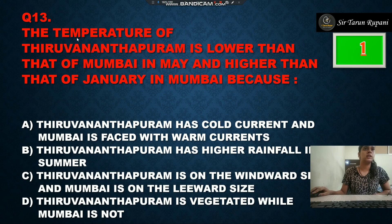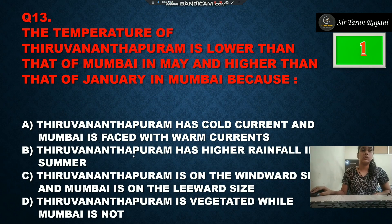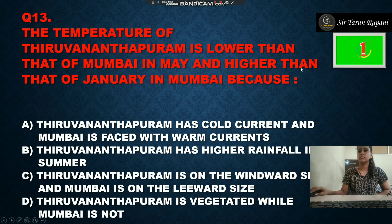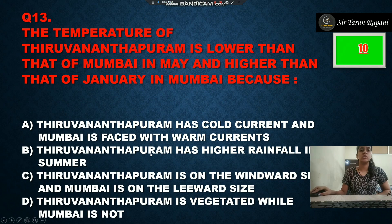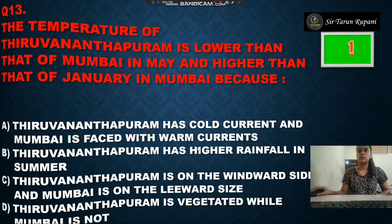Our next question: the temperature of Thiruvananthapuram is lower than that of Mumbai in May and higher than that of Mumbai in January because — option A is Thiruvananthapuram has cold current and Mumbai faces warm current, option B is Thiruvananthapuram has higher rainfall in summer, option C is Thiruvananthapuram is on the windward side and Mumbai is on the leeward side, option D is Thiruvananthapuram is more vegetated than Mumbai. The correct answer is Thiruvananthapuram has higher rainfall in summer, option B.